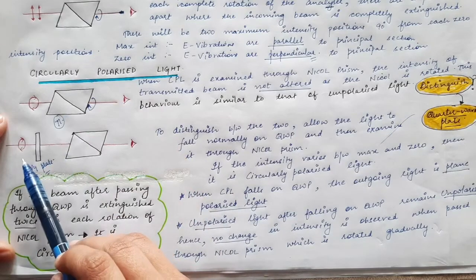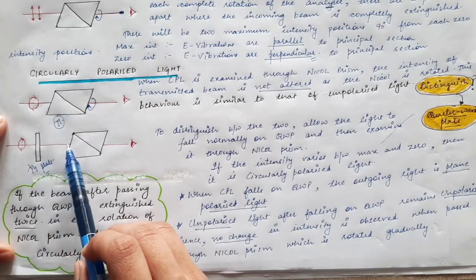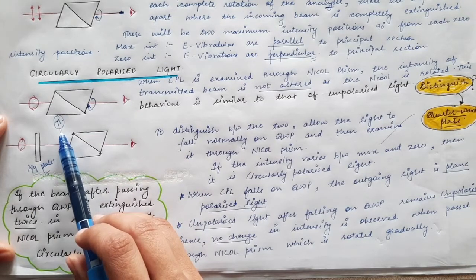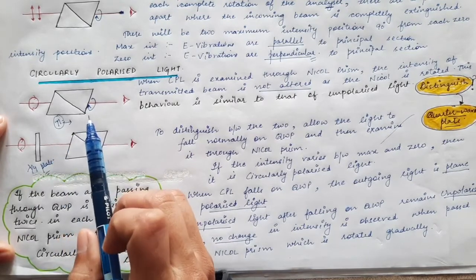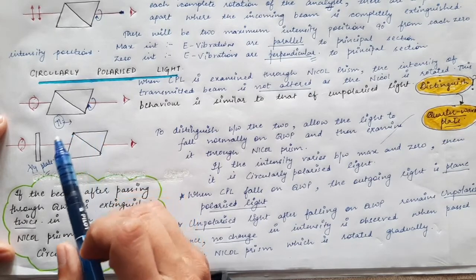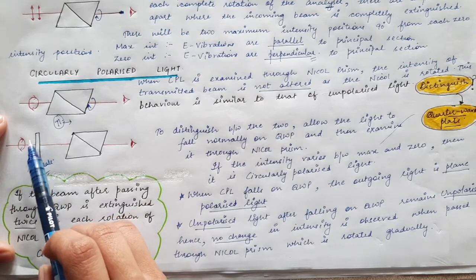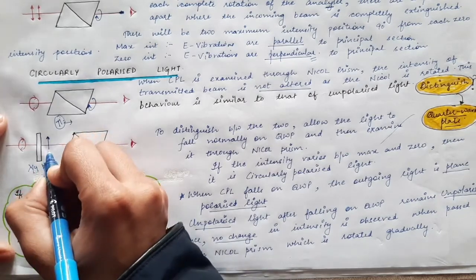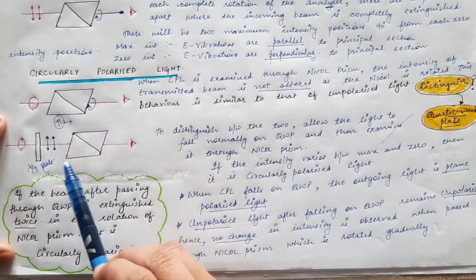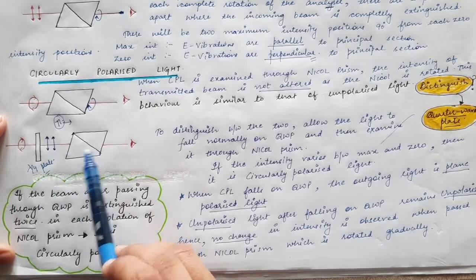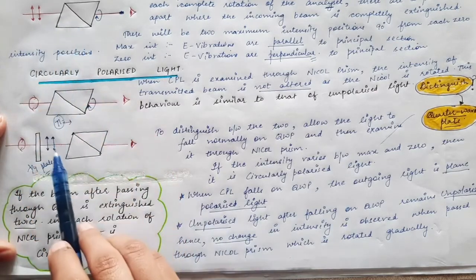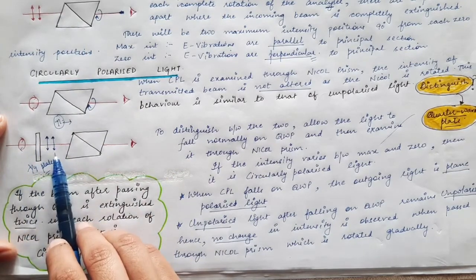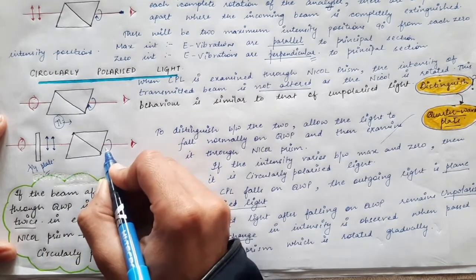When circularly polarized light passes through a quarter wave plate, the transmitted light has a phase difference of π between the two orthogonal components. A phase difference of π means the light is linearly (plane) polarized. So circularly polarized light is converted into plane polarized light by the quarter wave plate. This plane polarized light is then made to fall on a Nicol prism, which is the same case as plane polarized light examined through a Nicol prism.